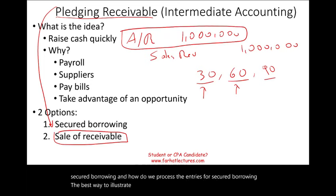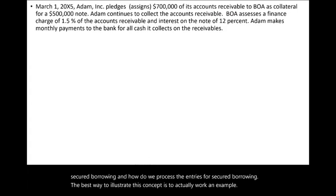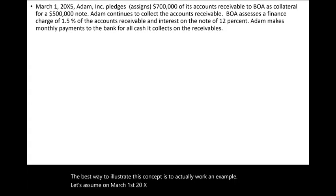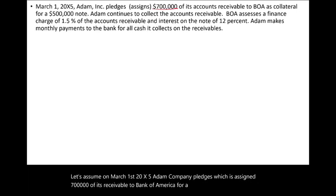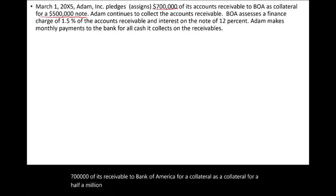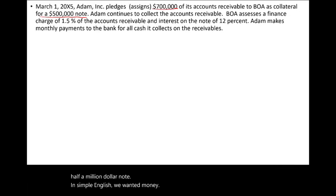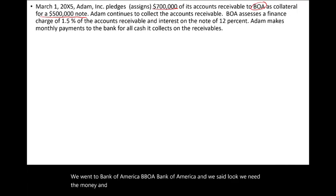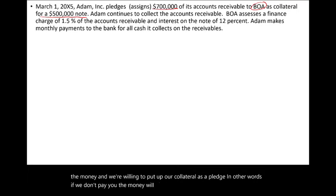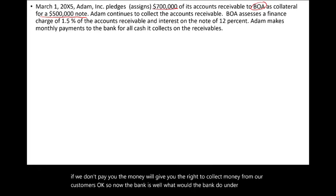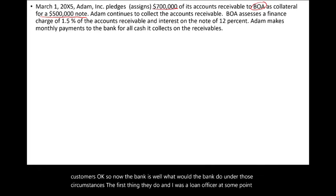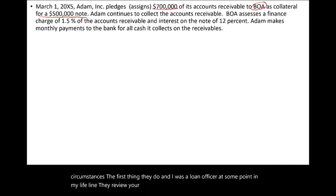The best way to illustrate this concept is to work an example. Let's assume on March 1st, 20X5, Adam Company pledges $700,000 of its receivable to Bank of America as collateral for a $500,000 note. In simple English, we needed money and we went to Bank of America and said we're willing to put up our collateral as a pledge — if we don't pay, the bank has the right to collect from our customers. The bank, as a loan officer would do, reviews your customers to make sure they are creditworthy.